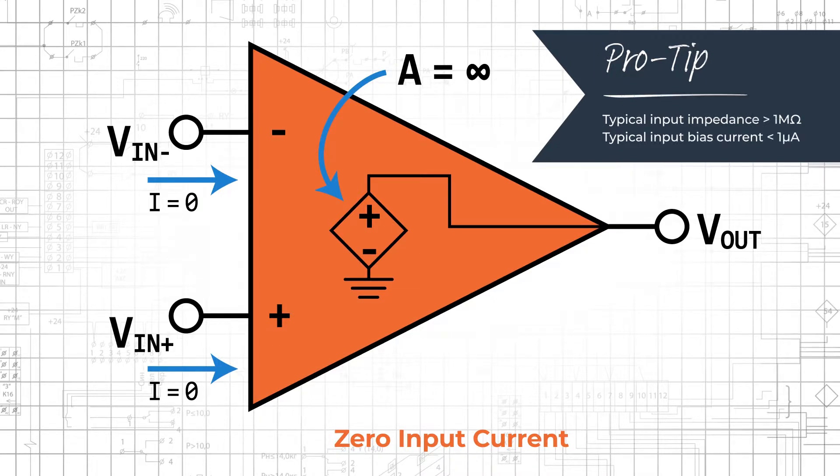Op amps also have input bias currents, that is, currents that flow through the input terminals and enable operation of the IC's internal circuitry. Input bias currents are small in BJT op amps and extremely small in MOSFET op amps. Nevertheless, they will cause serious problems in circuits that do not provide a proper DC path for these currents.